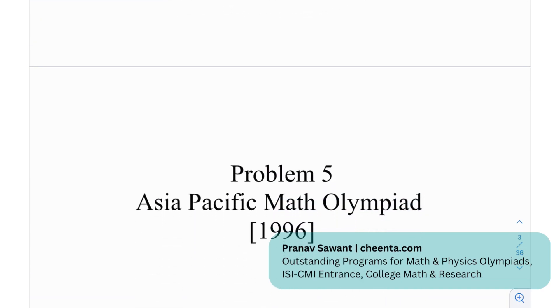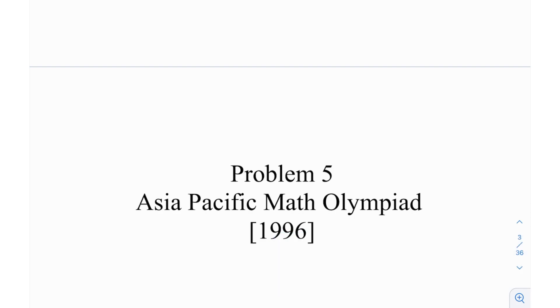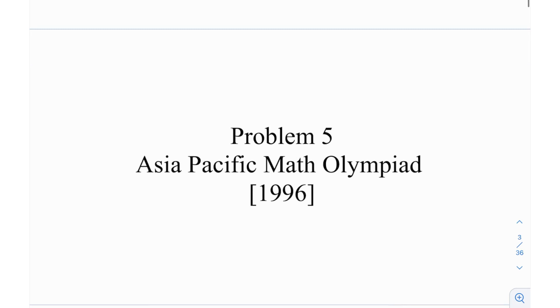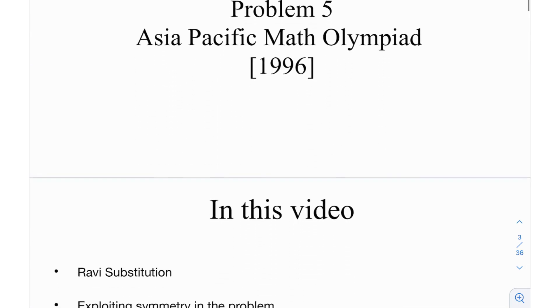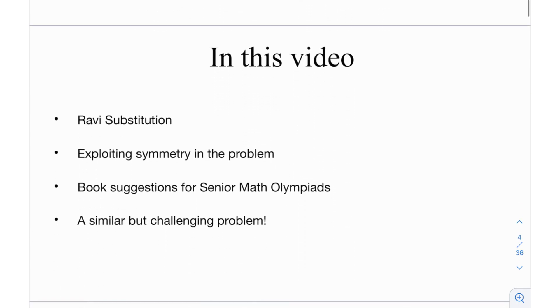So this is problem number 5 from the Asia Pacific Math Olympiad in the year 1996, and this is one of the most standard uses of Ravi substitution, one of the best uses in fact. And in this video, we're going to see about Ravi substitution, we're going to talk about symmetry. The basic idea of Ravi substitution is to convert the given inequality into something a little bit more symmetric, because symmetric inequalities are usually easier to deal with.